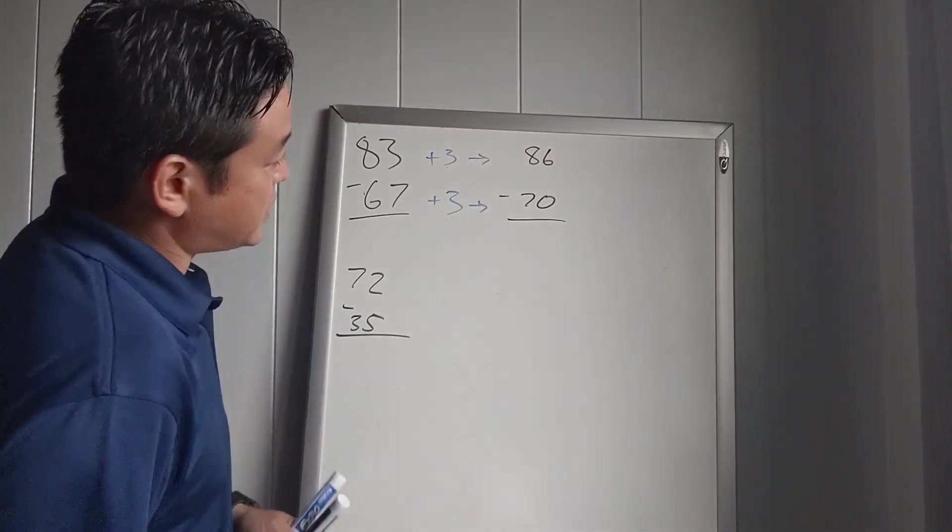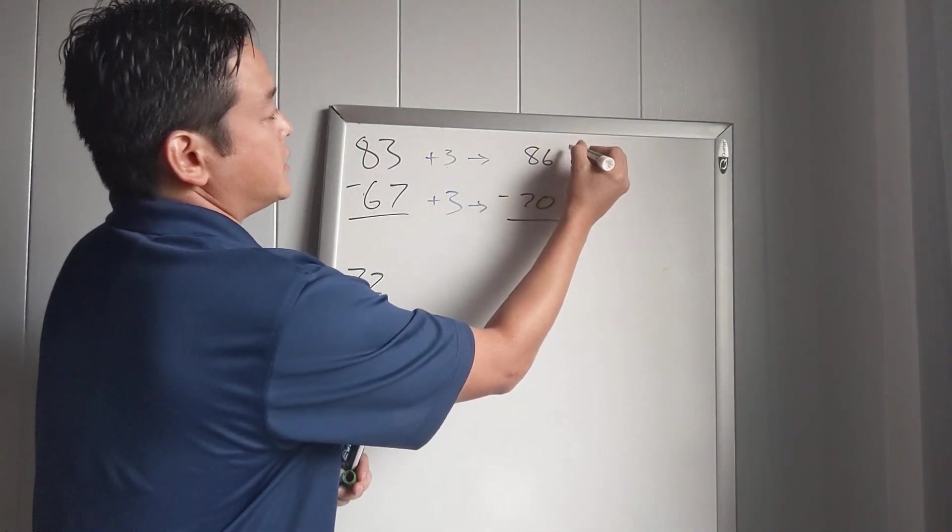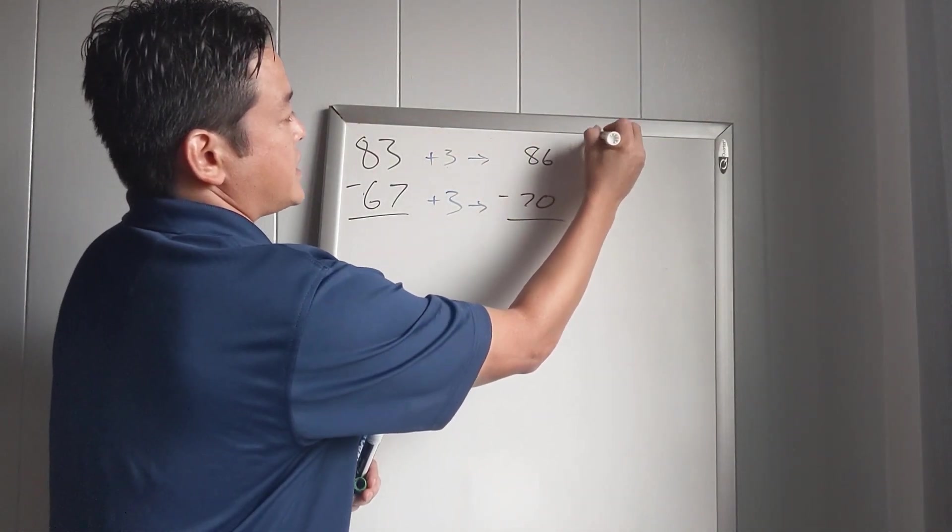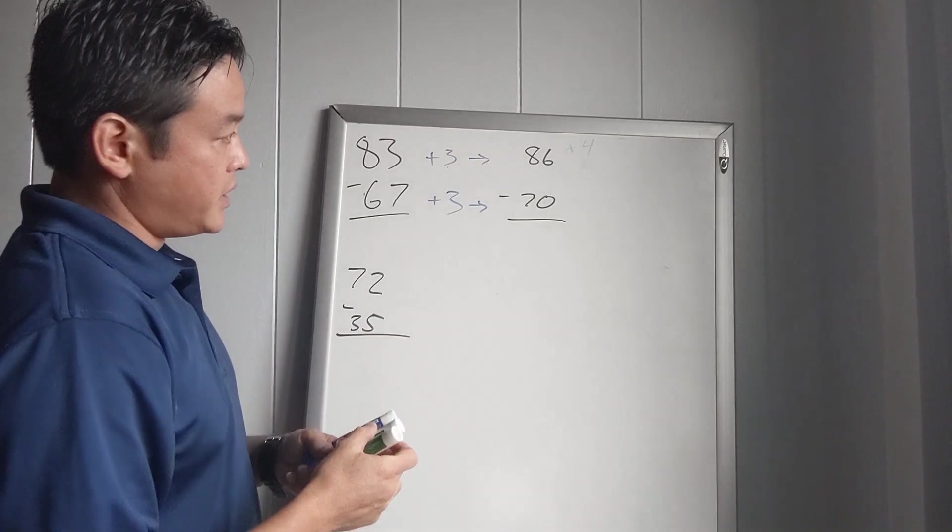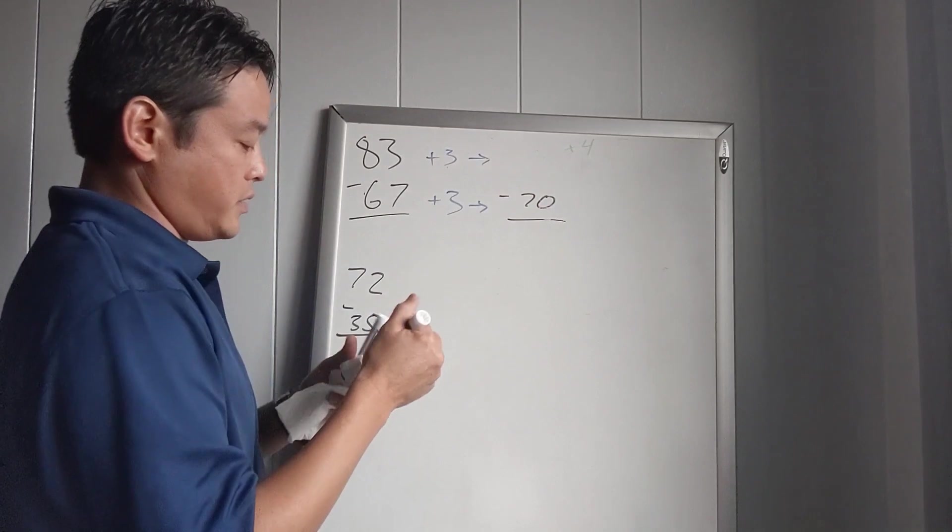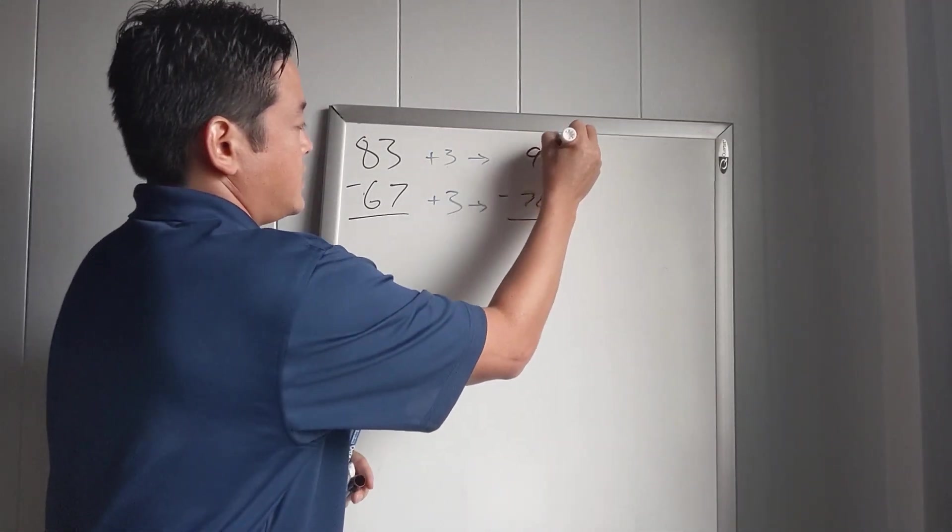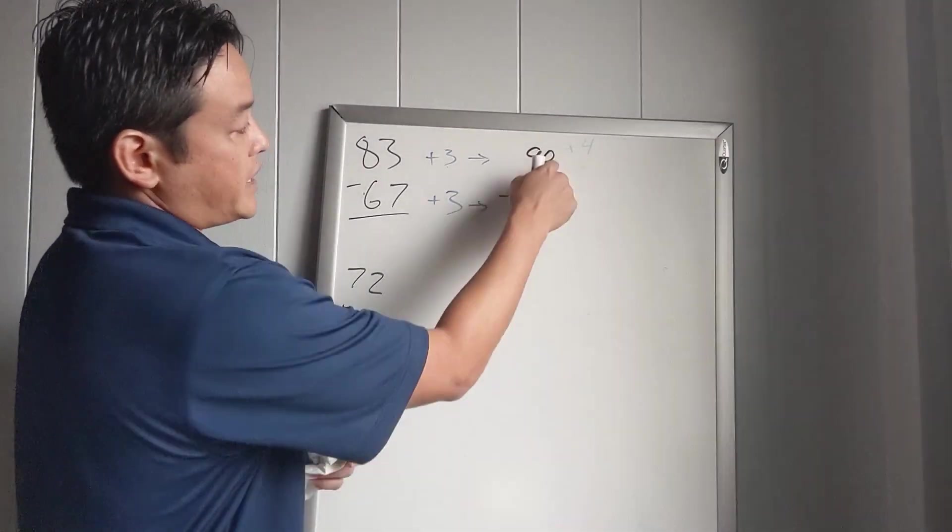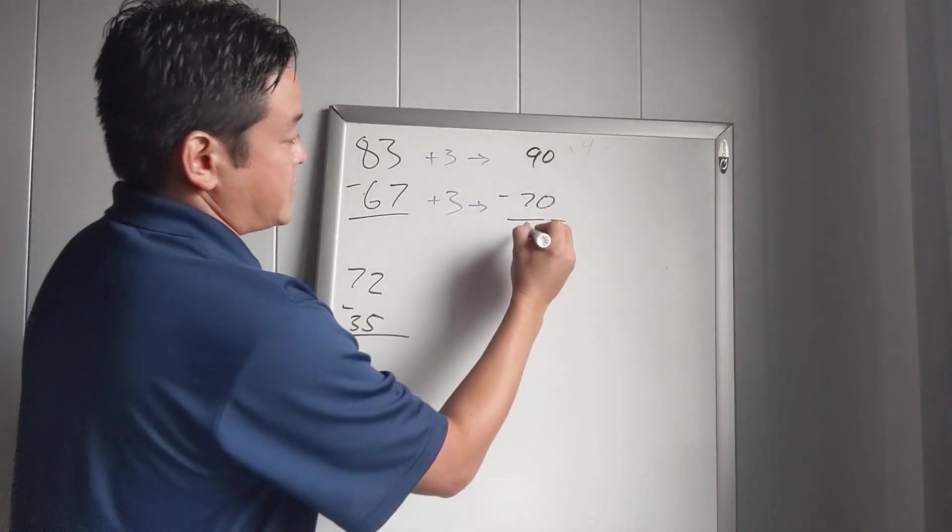Again here, we might have noticed this number is really close to 90, so let's add 4 to make it a whole number. So we're going to add 4 to make this 90. And here, 90 minus 70 is an easy problem—that's just 20.